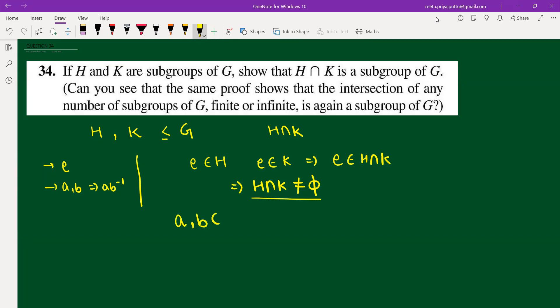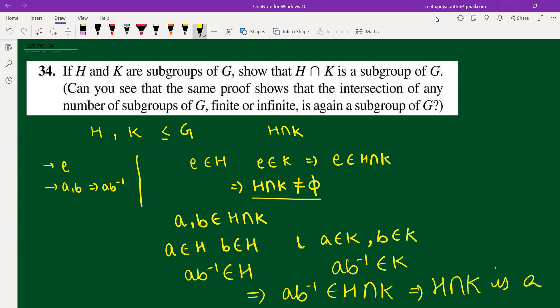Then we can consider any number of elements, and this implies that a belongs to H, b belongs to H, and a belongs to K, and b belongs to K. Now from here, the trick applies. Since H is a subgroup, ab inverse must belong to H. And K is a subgroup implies ab inverse belongs to K. This is implying that ab inverse belongs to H intersection K, and this implies that H intersection K is a subgroup.